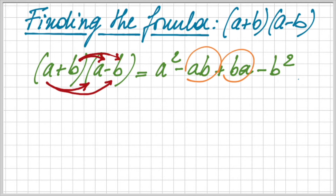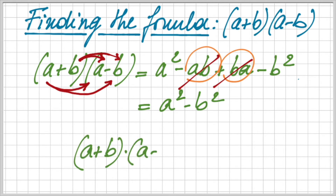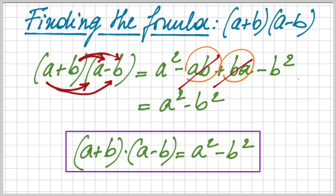We see that ab and ba are basically the same because of the commutative property — a times b is equal to b times a. And we can eliminate those because they have the opposite sign. The result of this is a squared minus b squared. So the formula we have is that the product of a plus b with a minus b gives a squared minus b squared.